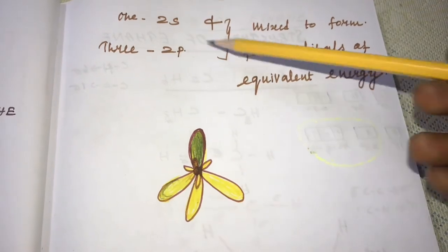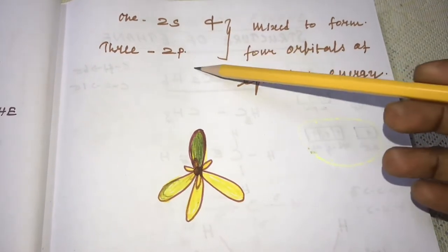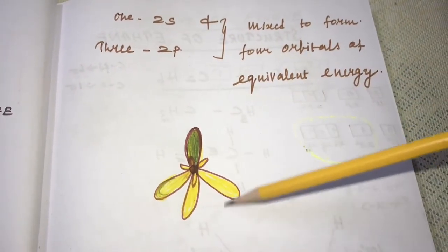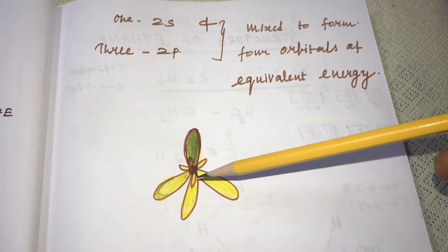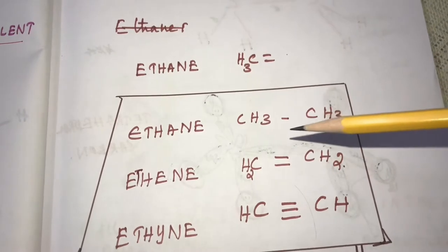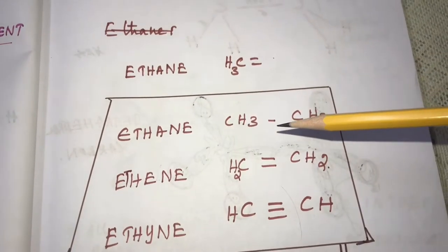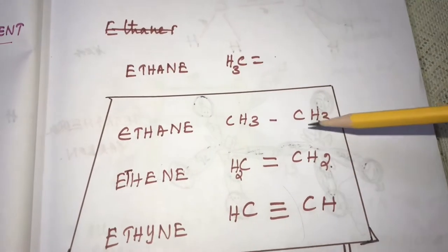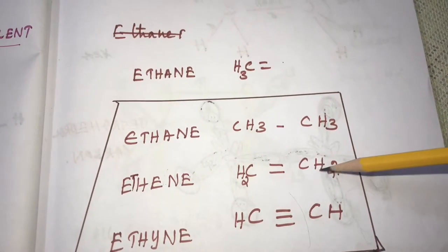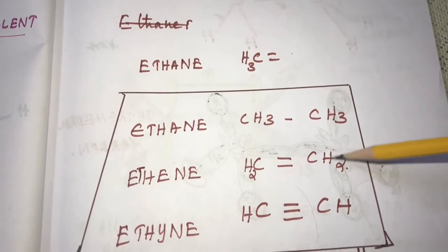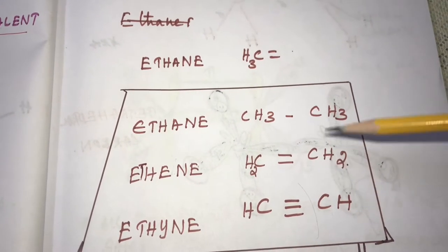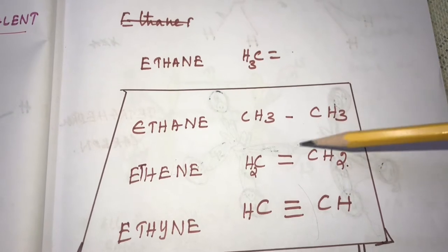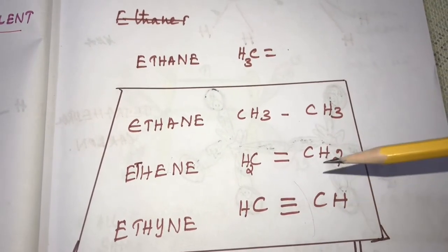The 1s and 3p orbitals produce 4 lobes of sp3 hybrid orbitals. In this video, we are going to see the structure of ethane (sp3 hybridization), ethene (sp2 hybridization), and ethyne (sp hybridization), corresponding to single bond, double bond, and triple bond respectively.